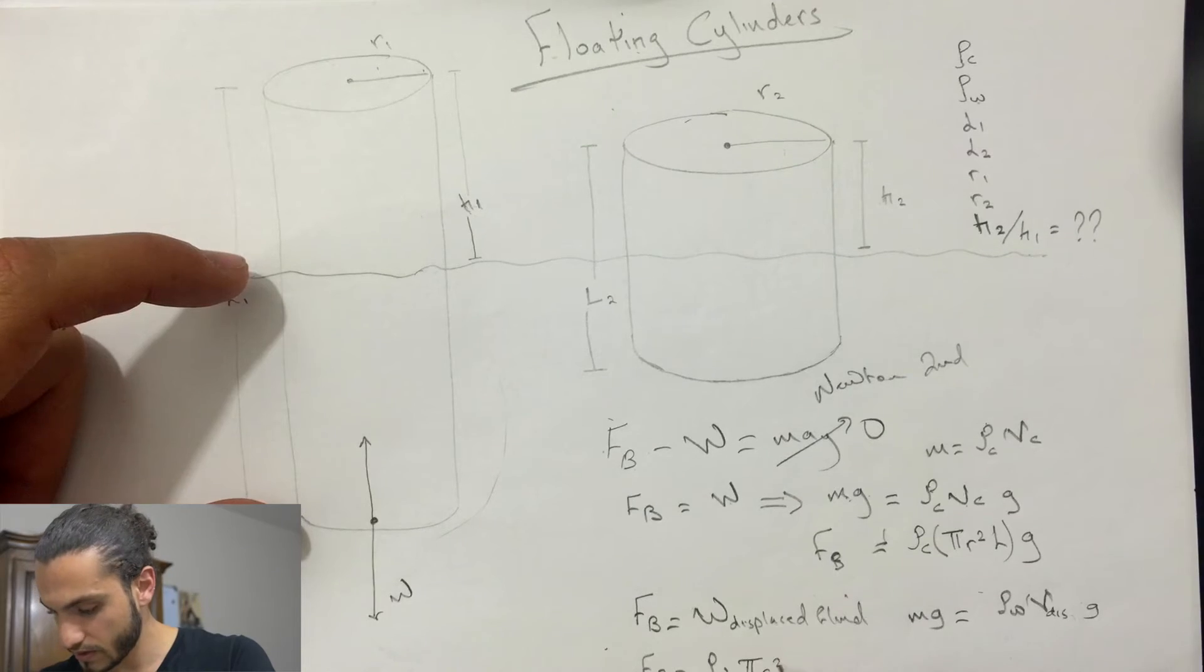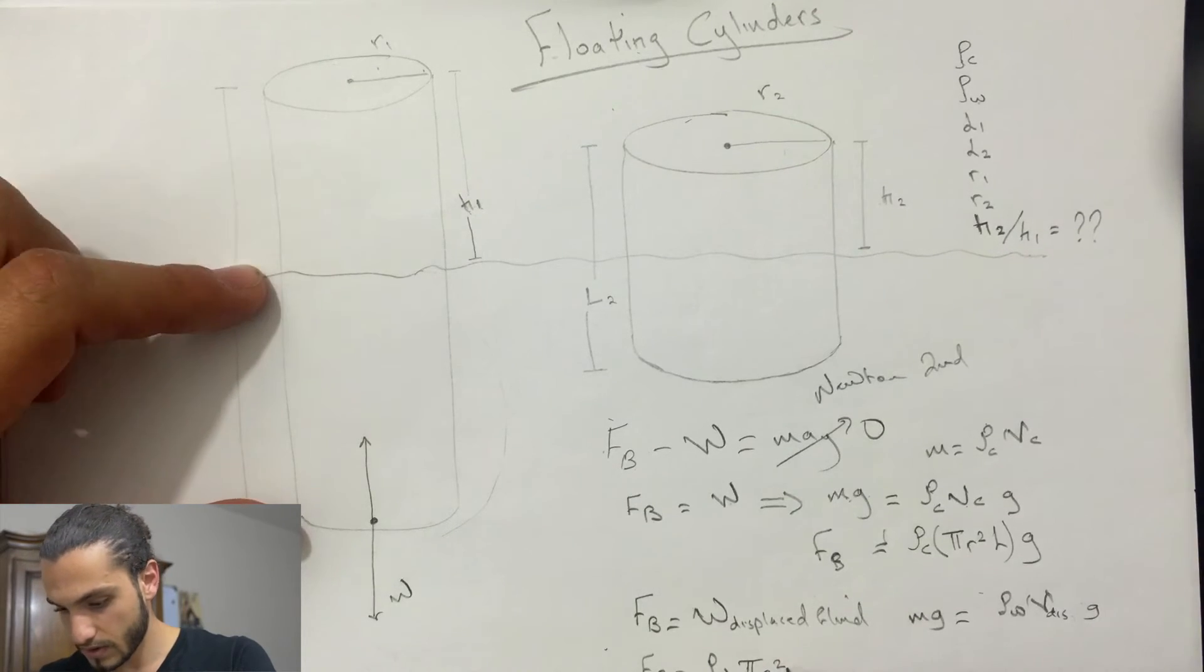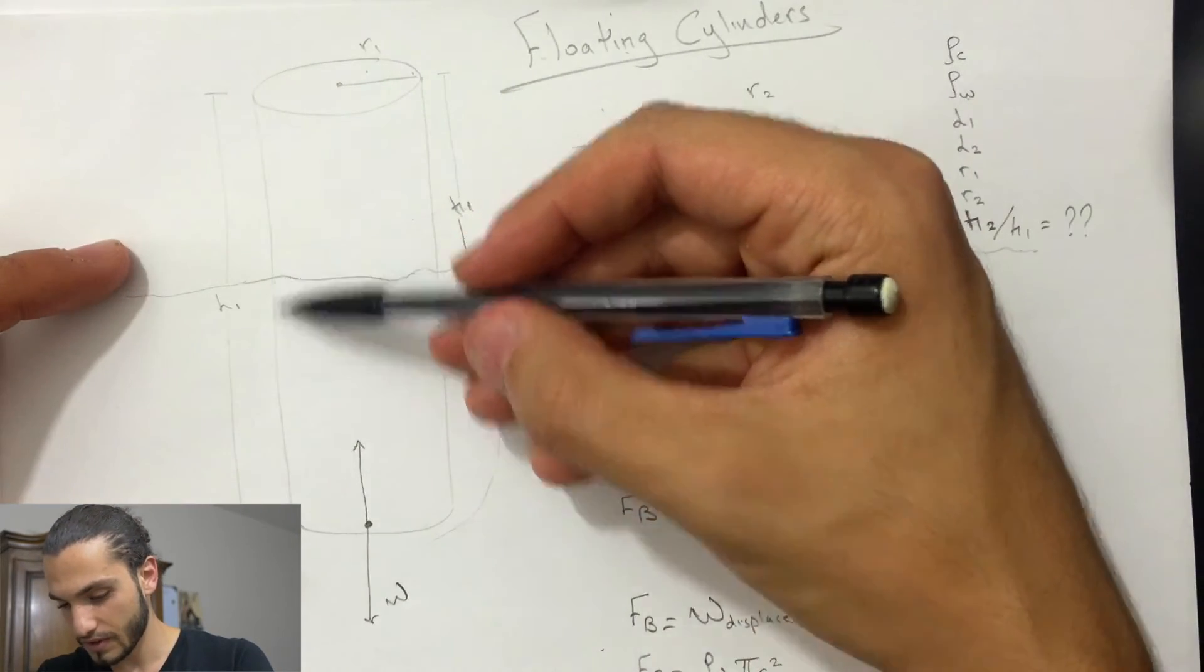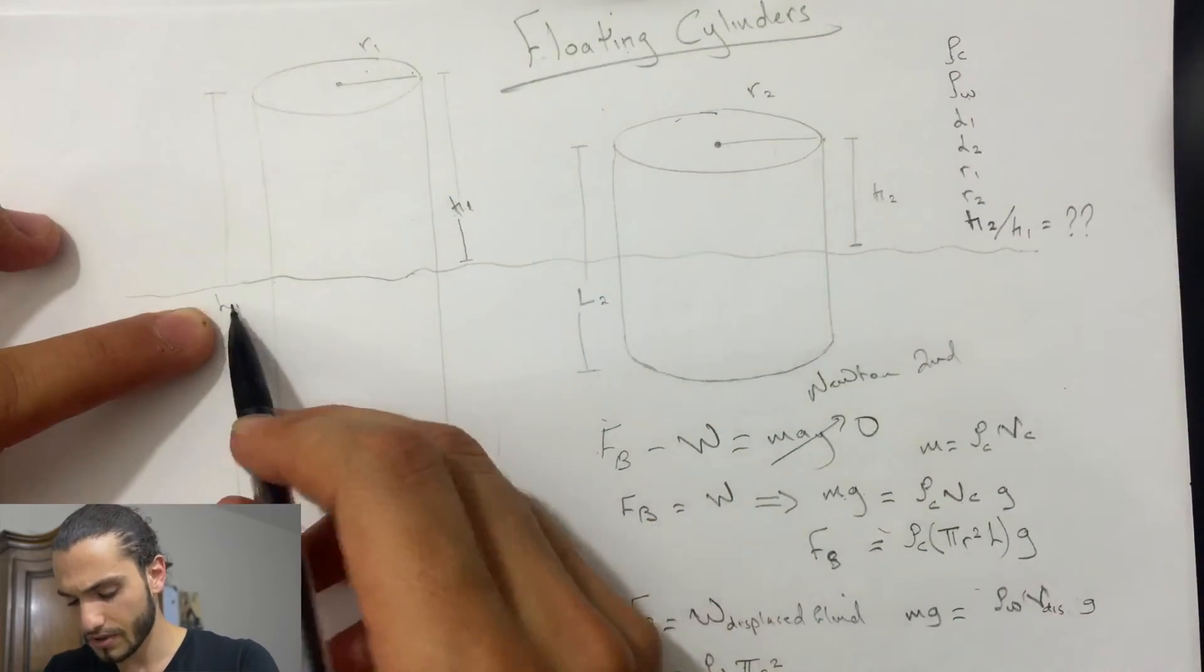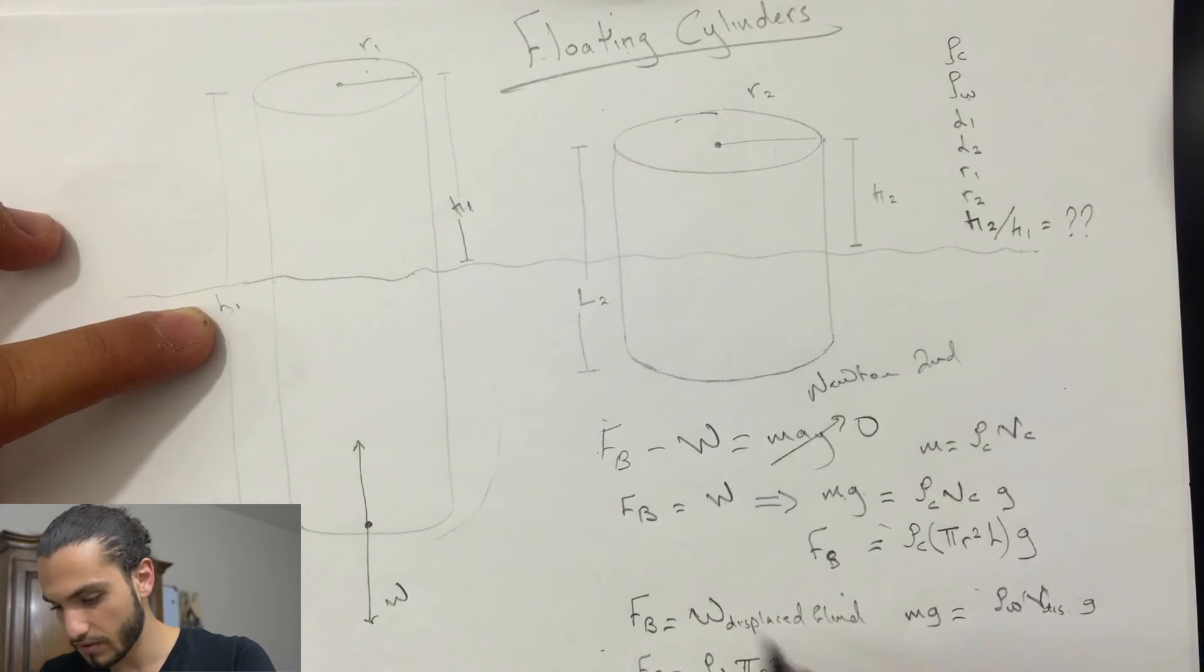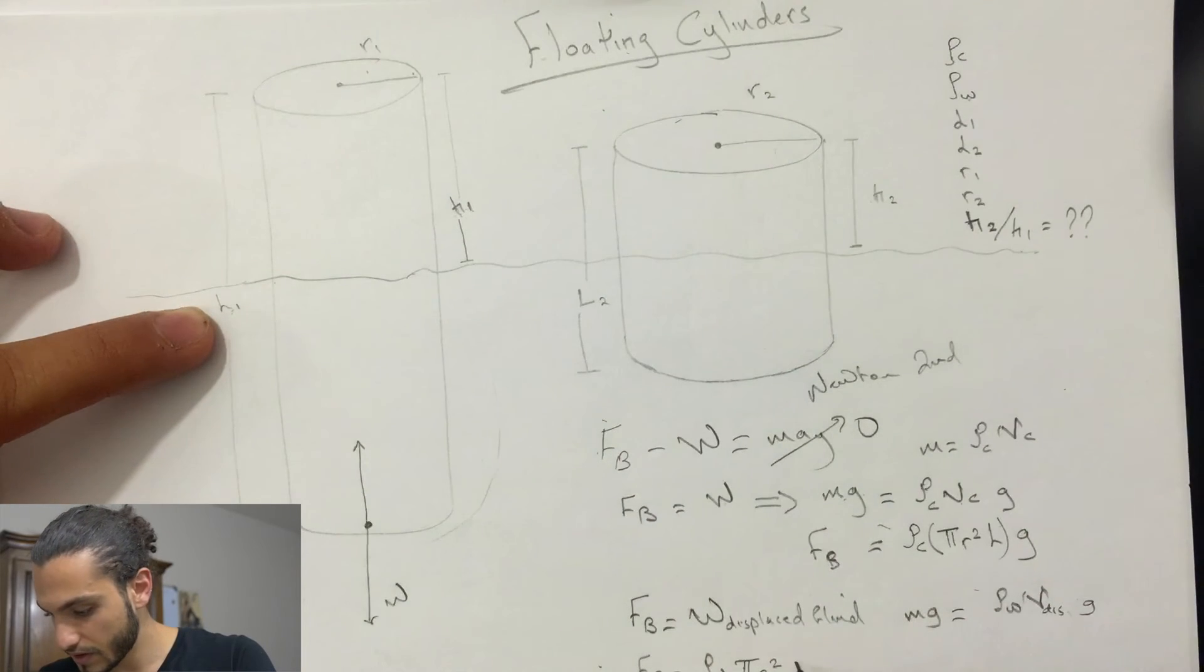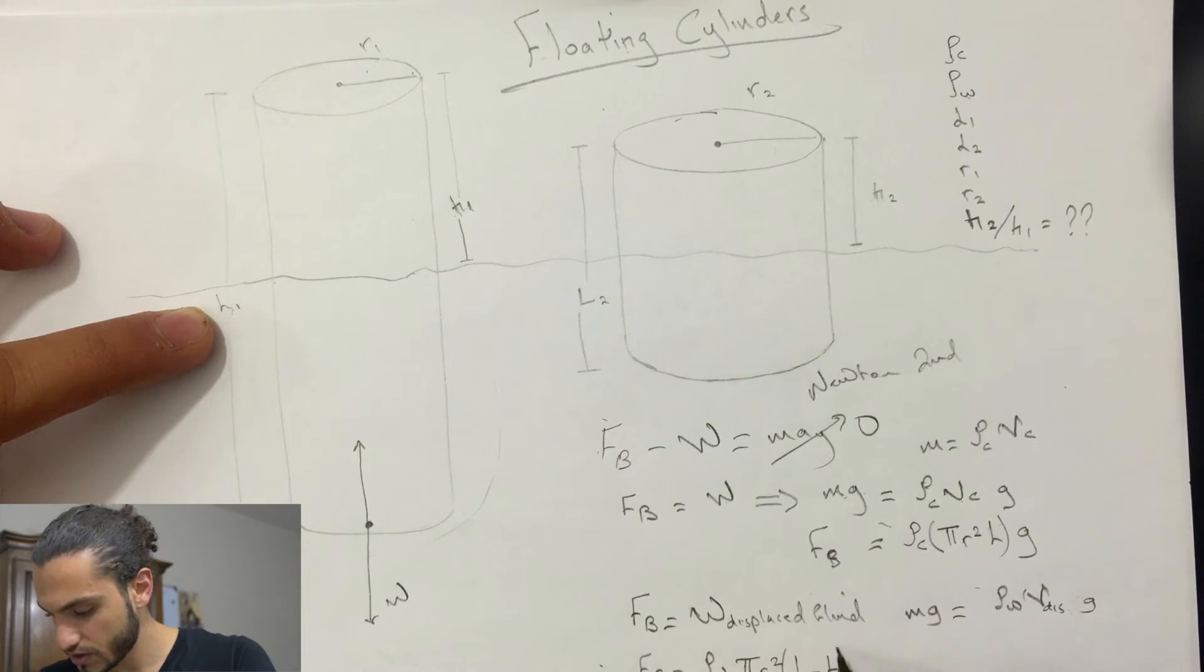Pi r squared times the length of this guy, which is L minus H. I'm saying L because just in general, I don't specify just for this one. So it's L minus H times G because it's a force.